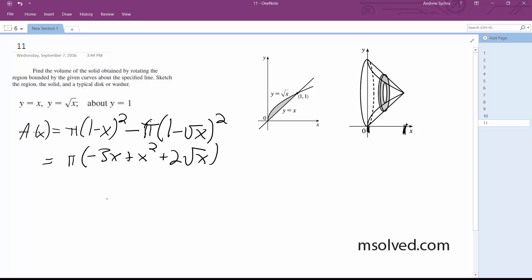All right, so the volume here is going to be from 0 to 1. And then a of x dx is equal to pi from 0 to 1, and we have negative 3x plus x squared plus 2 root of x dx.